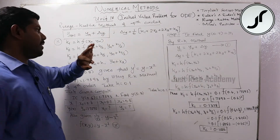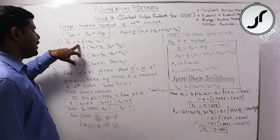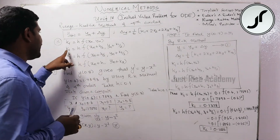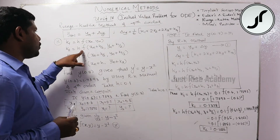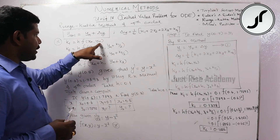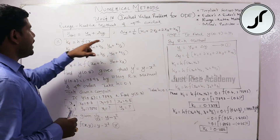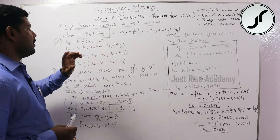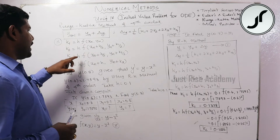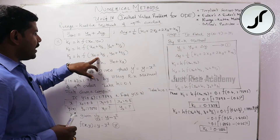K1 is equal to h into f(x_n, y_n). K2 is equal to h into f(x_n plus h/2, y_n plus k1/2). K3 is equal to h into f(x_n plus h/2, y_n plus k2/2).